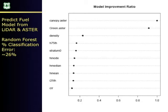Looking at the random forest importance plot for fuel model, the x-axis is model improvement ratio — variables to the right are more important. The two top variables are still the ASTER variables, so ASTER actually turned out to be more useful for fuel model. But when you add all the different LiDAR metrics, it significantly increases predictive power and you get a better model. The classification error was 26% for this categorical variable.